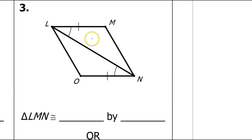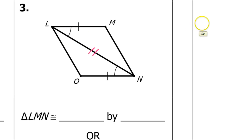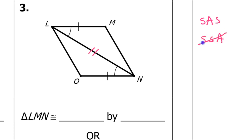In addition to what is already marked, side LN is shared by both triangles, so that'll be congruent by the reflexive property. That gives me two sides and an angle. So the question is: is this side-angle-side, which is good, or is this side-side-angle, which does not prove anything? And it's all about whether or not this angle is between the sides.